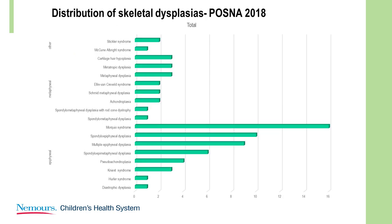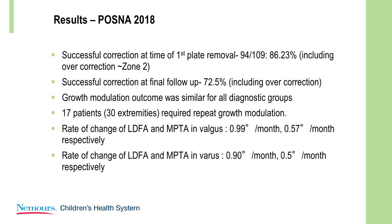I presented this data at POSNA this year. We had 109 children with skeletal dysplasia in whom we had used growth modulation, with variable diagnoses. Successful correction for the first time was around 86%, and successful correction at final follow-up was around 72%, with a very good outcome. The rate of change was similar to that seen in average stature children — which I found interesting — at around one degree per month in the distal femur and 0.6 degrees in the upper tibia.